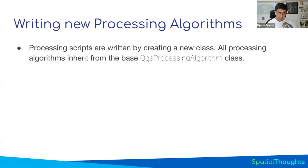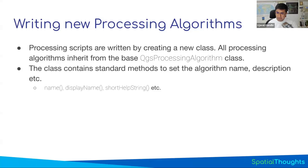Why a class? Because you create a new class that inherits from a class called QgsProcessingAlgorithm. This is a very big class that knows how to create dialog boxes, how to do validation, how to do batch processing - everything that processing algorithms need is already implemented. So you don't need to implement it again. You just inherit from it and get all the functionality. The things you have to write are some methods such as the name of the algorithm, the help description, and so on.